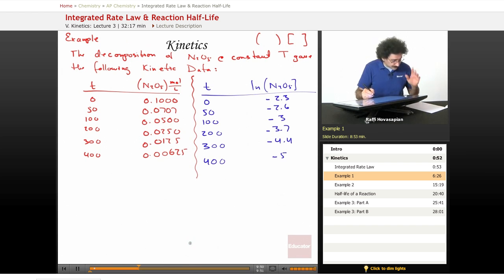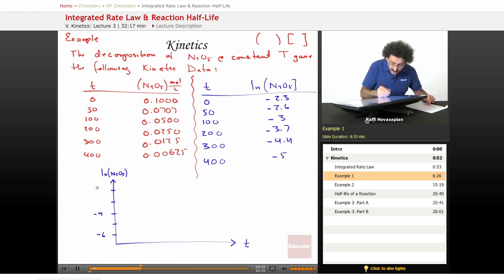So now we're going to plot this. We have our y axis, our x axis. This is our time, this is going to be our logarithm of the N2O5 concentration. We'll just put some numbers up here: negative 6, negative 5, negative 4, negative 3, negative 2. So minus 6, minus 4, minus 2. And we'll go 100, 200, 300, 400.